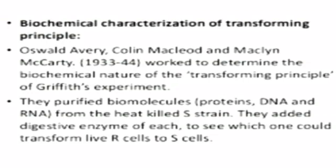They purified biochemicals — proteins, DNA, and RNA — from the heat-killed S-cells to see which one could transform live R-cells into S-cells. They discovered that DNA alone from S-bacteria caused R-bacteria to become transformed. They also discovered that protein-digesting enzymes (proteases), DNA-digesting enzymes (DNase), and RNA-digesting enzymes (RNase) did not affect transformation. So the transforming substance was not a protein or RNA. Digestion with DNase inhibited transformation, suggesting that DNA caused the transformation.